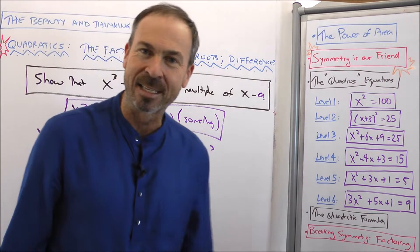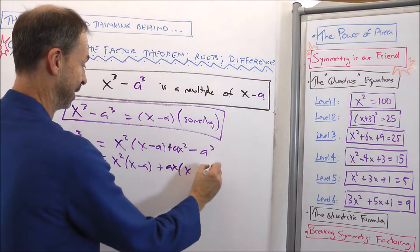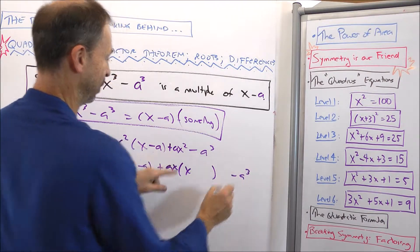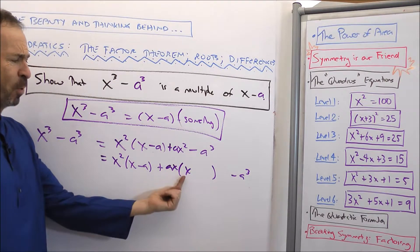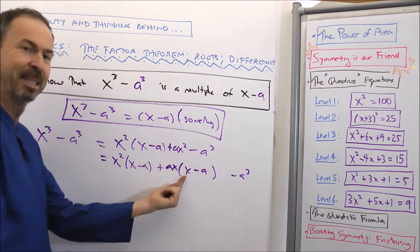and let me focus on ax². At least there's a multiple of x. It's actually ax times x, and there's still a minus a³ over here. But I don't want a multiple of x. I want a multiple of x minus a.